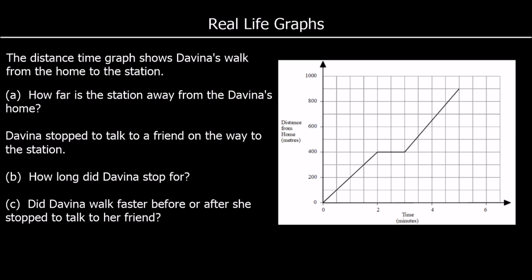And one more question. Last question. We've got a distance time graph. Try and answer these questions. Give it a go and press play when you're ready for the answers. So it's Davina's walk from home to the station. The first question says, how far away is the station? So how far has she traveled? In total, it's 900 meters.